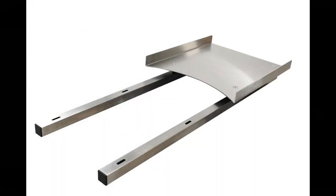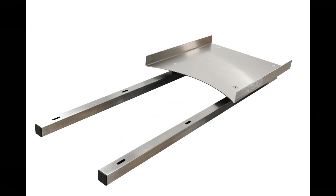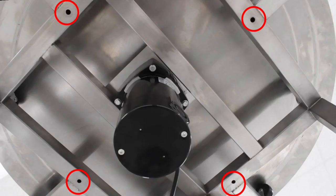To attach the infeed table, locate the two mounting bars on the infeed table, shown here. These bars have slots that line up with holes in the frame of the accumulation table, located underneath the rotating disc, shown here.